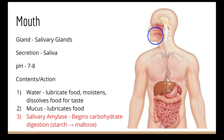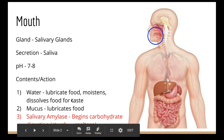Our first enzyme is called salivary amylase, because it's from the saliva. This is what's going to take all of our complex carbohydrates — polysaccharides, for example starch — and start breaking them down into something like maltose.